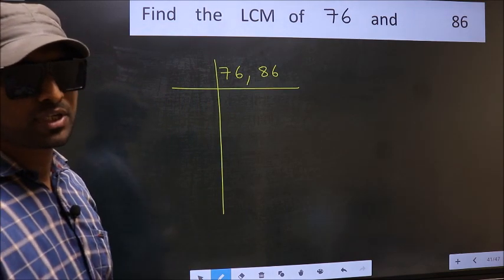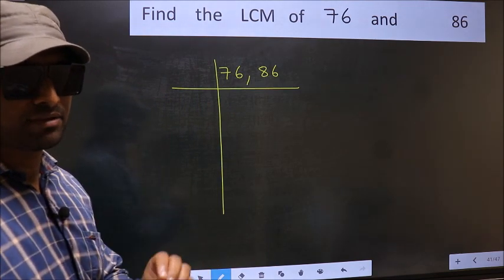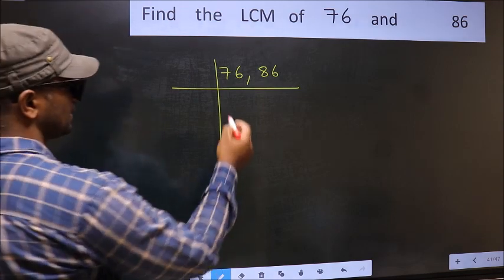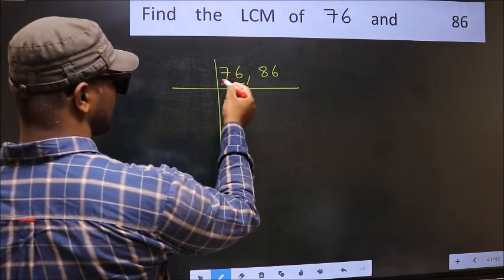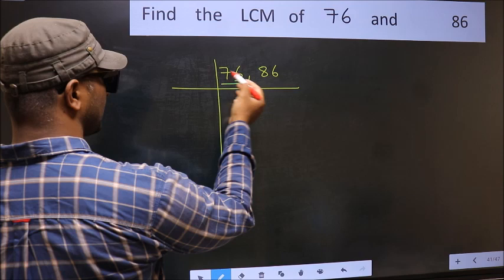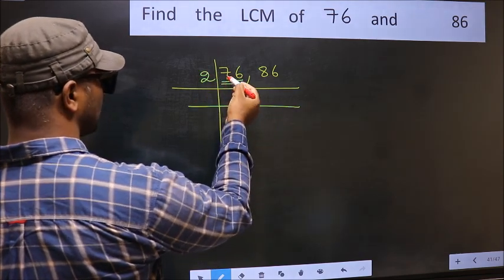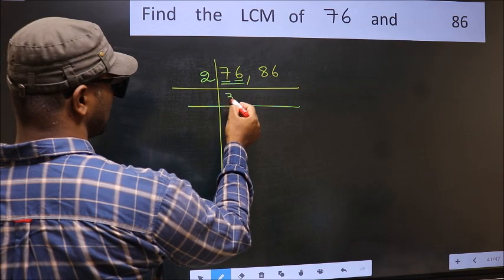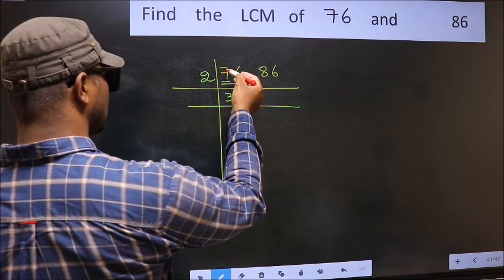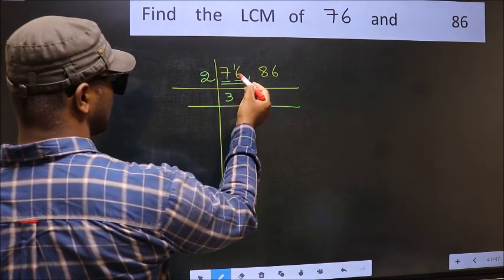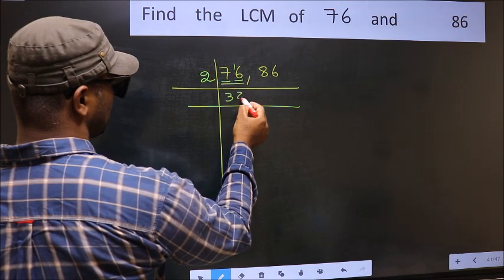Now you should focus on the first number, which is 76 here. In this number, last digit 6, even, so take 2. First number, 7. A number close to 7 in 2 table is 2, 3, 6. 7 minus 6, 1. 1 carried forward 16. When do we get 16 in 2 table? 2, 8, 16.